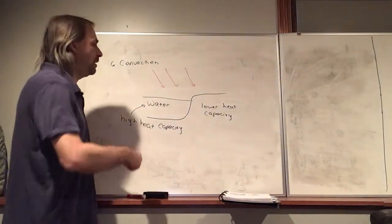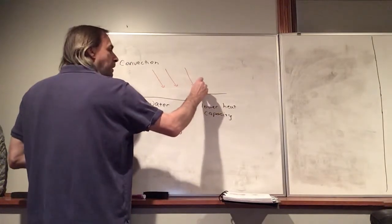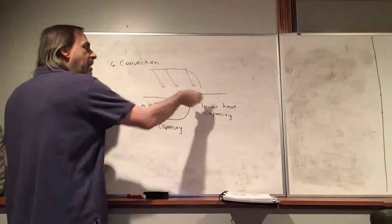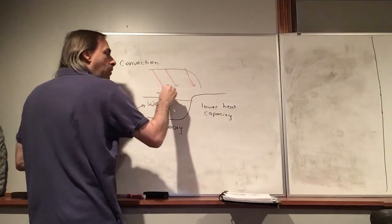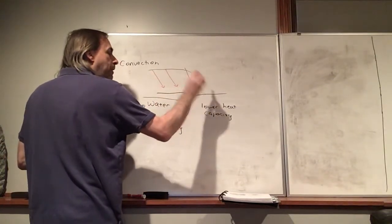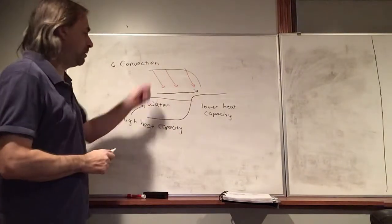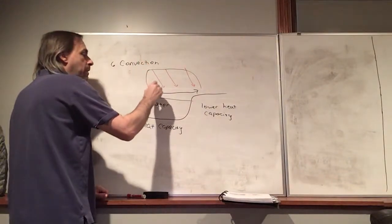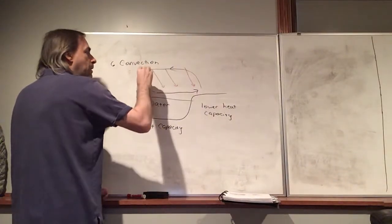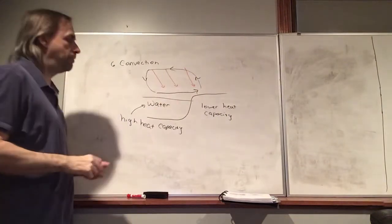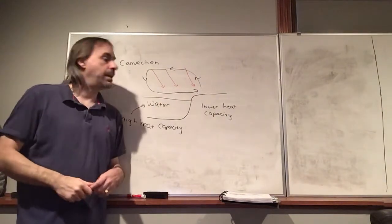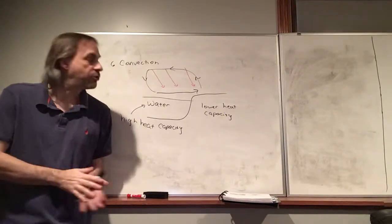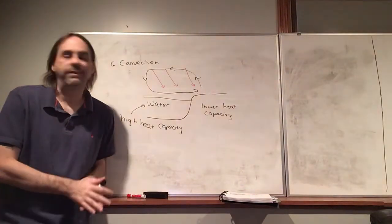And then we're going to get these convection cells that are going to look like this. Because we have cooler air over the water. So, when this air rises, air is going to flow in from over the water. Because that's colder. And so, we're going to get convection cells that look like this. So, this has very important effects on the weather. If you live next to a large body of water, like a lake, like Michigan, for example. Although we're not that close to it. Or if you live near the ocean.